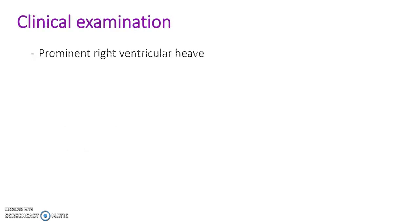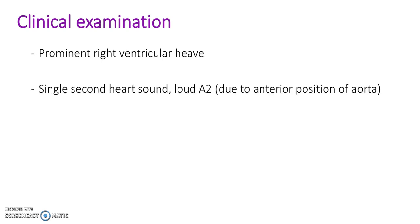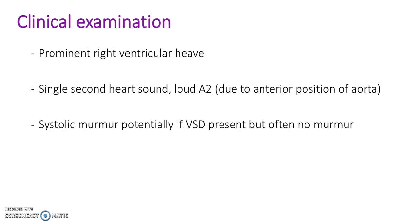What would we see on examination? You would see a prominent right ventricular heave, a single second heart sound, a loud A2 due to the anterior position of the aorta. Potentially a systolic murmur if a VSD is present, but often there is no murmur. There would be no signs of respiratory distress.